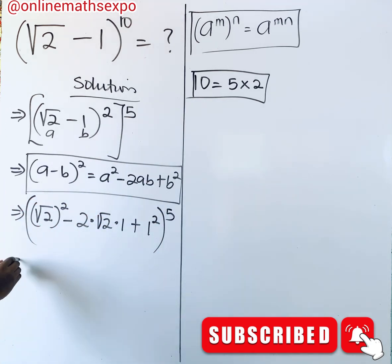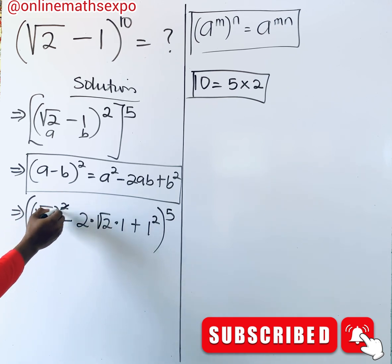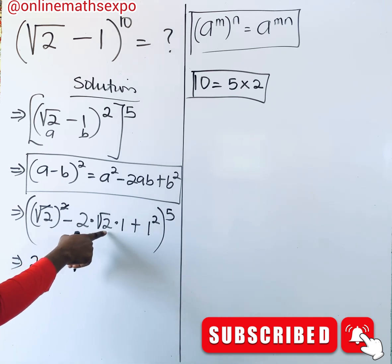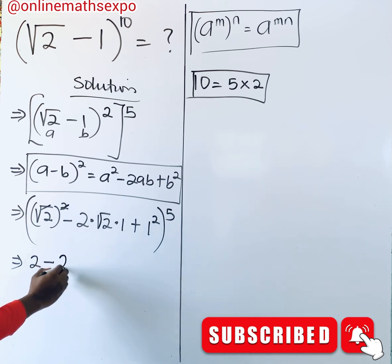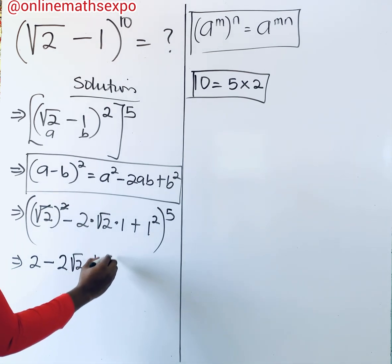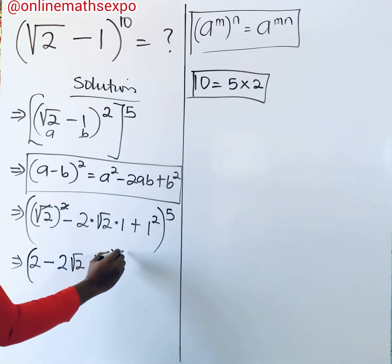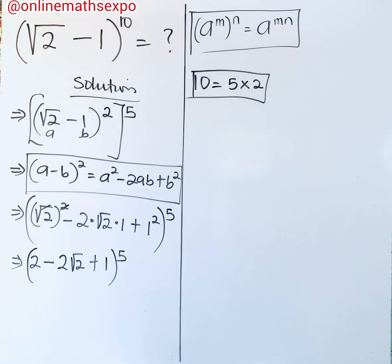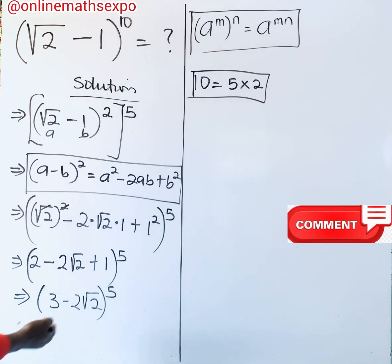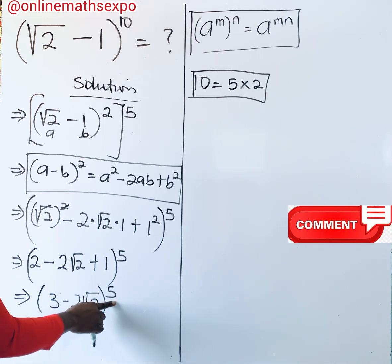Simplify: the square cancels the root, so root 2 squared gives us 2. Then minus 2 times root 2 times 1 gives us 2 root 2. And 1 squared is 1. So we have 2 − 2 root 2 + 1, all raised to the power of 5. Then 2 plus 1 gives us 3, so we now have 3 minus 2 root 2, raised to the power of 5.